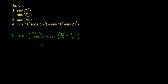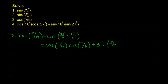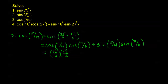Now we use our cosine subtraction formula. This gives us cosine of π over 4 times cosine of π over 6. Remember, when we have a negative in the argument for cosine, we're going to be adding these terms together, so plus sine of π over 4 times sine of π over 6. Cosine and sine of π over 4 are both root 2 over 2, cosine of π over 6 is root 3 over 2, and sine of π over 6 is 1 half.